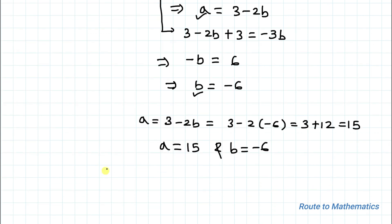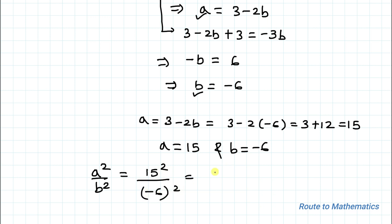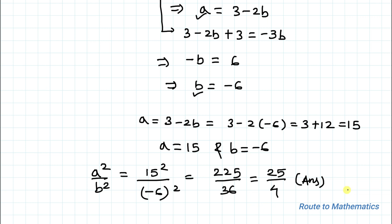We are asked to find a² / b². So that is 15² / (−6)² = 225 / 36 = 25/4, which is our answer. I hope you have understood the solution. Thanks for watching. Please subscribe to my channel and click the bell icon for more such interesting videos. Thank you.